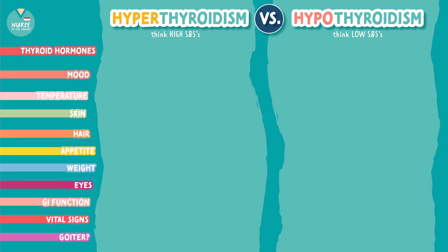Now let's compare thyroid hormones. In hyperthyroidism, think high thyroid hormones T3 and T4, and low thyroid stimulating hormone. For hypothyroidism it's the opposite — low thyroid hormones T3 and T4, and high thyroid stimulating hormone.